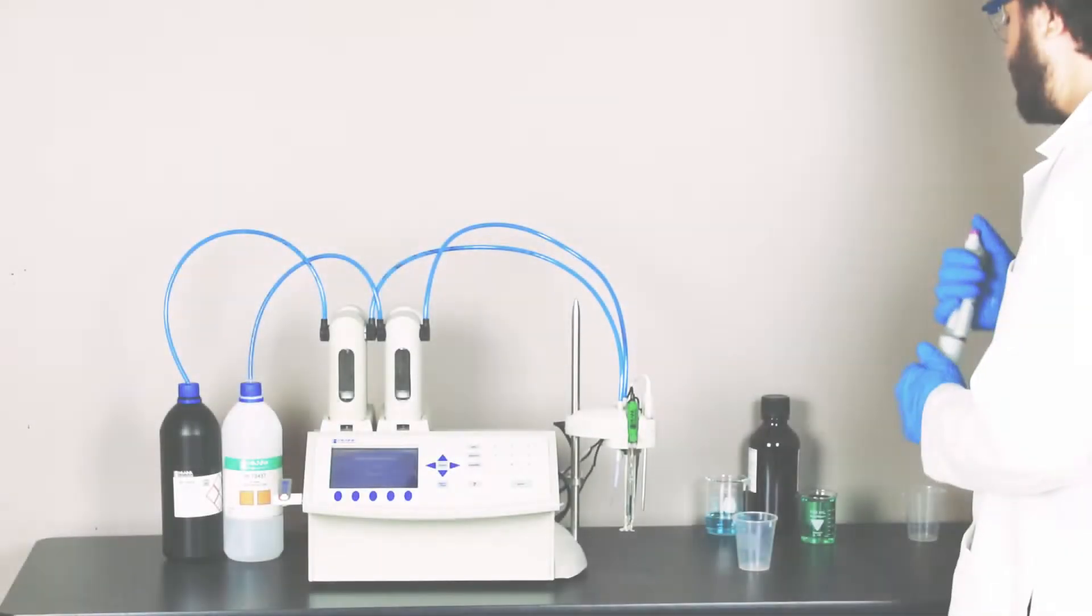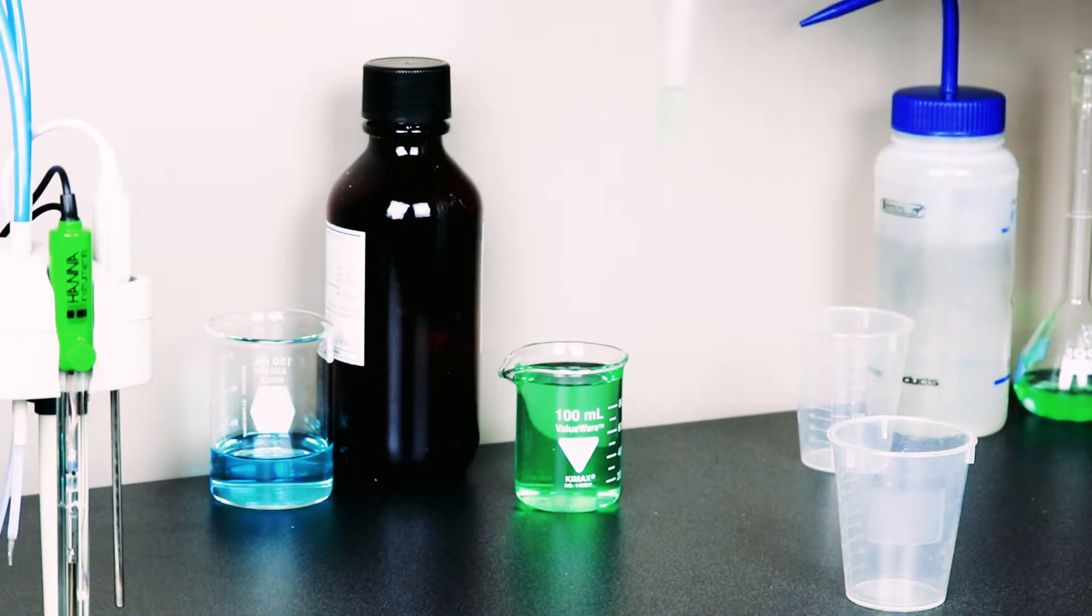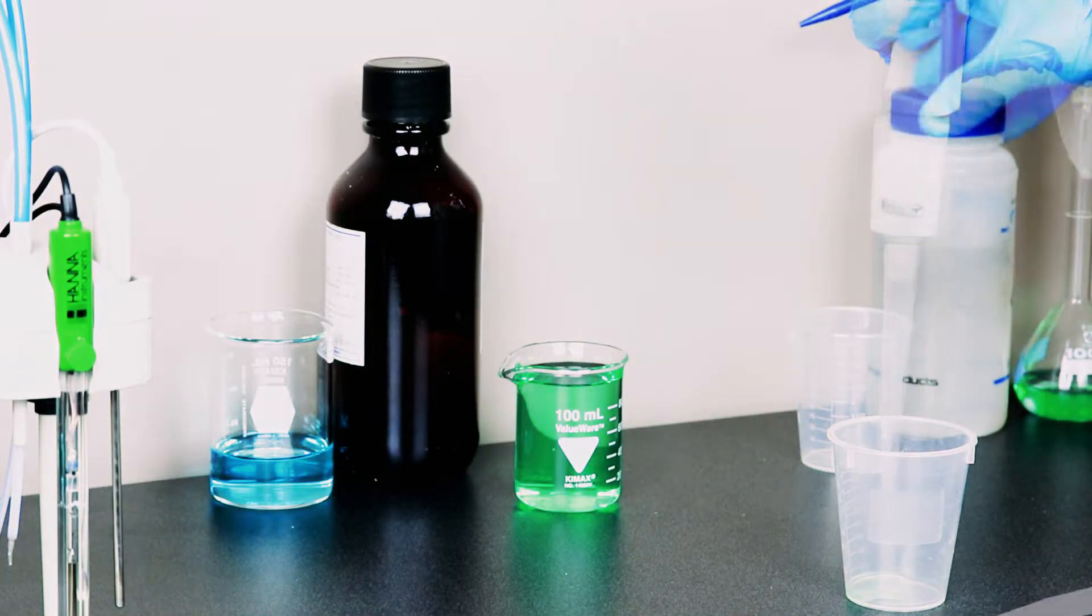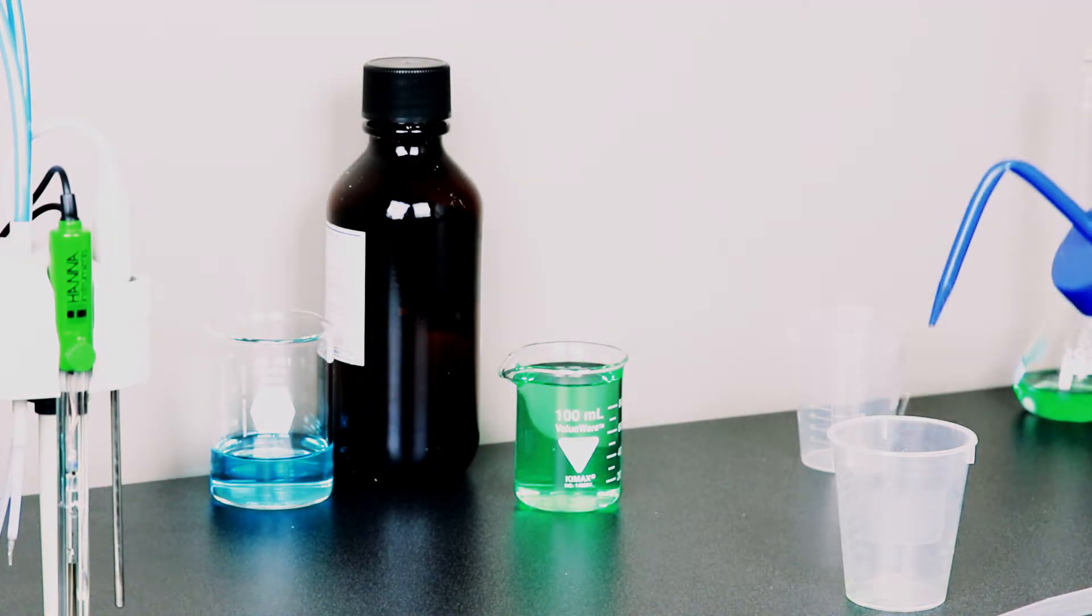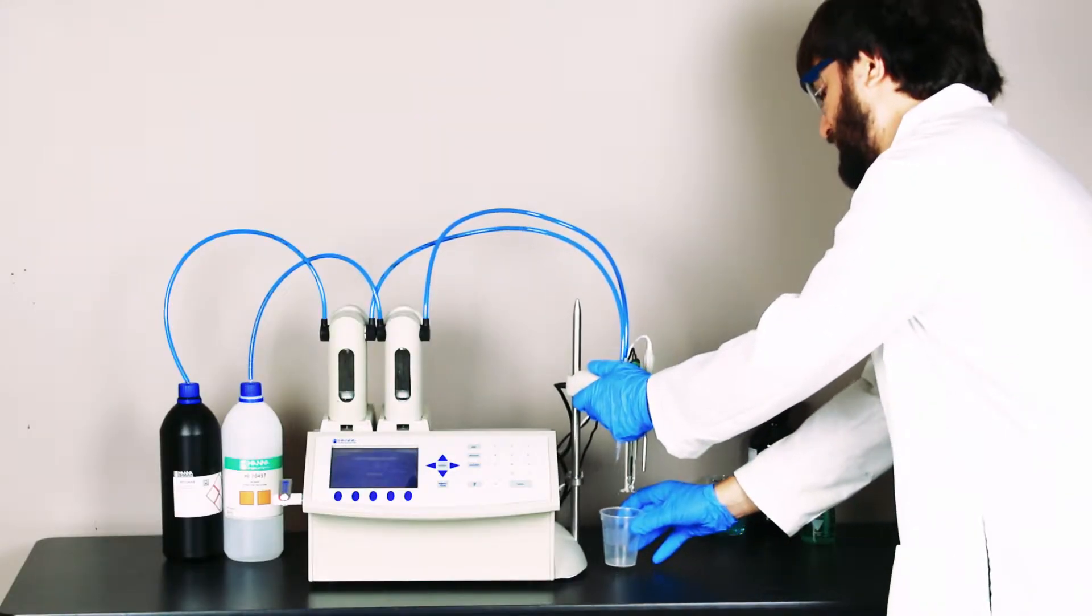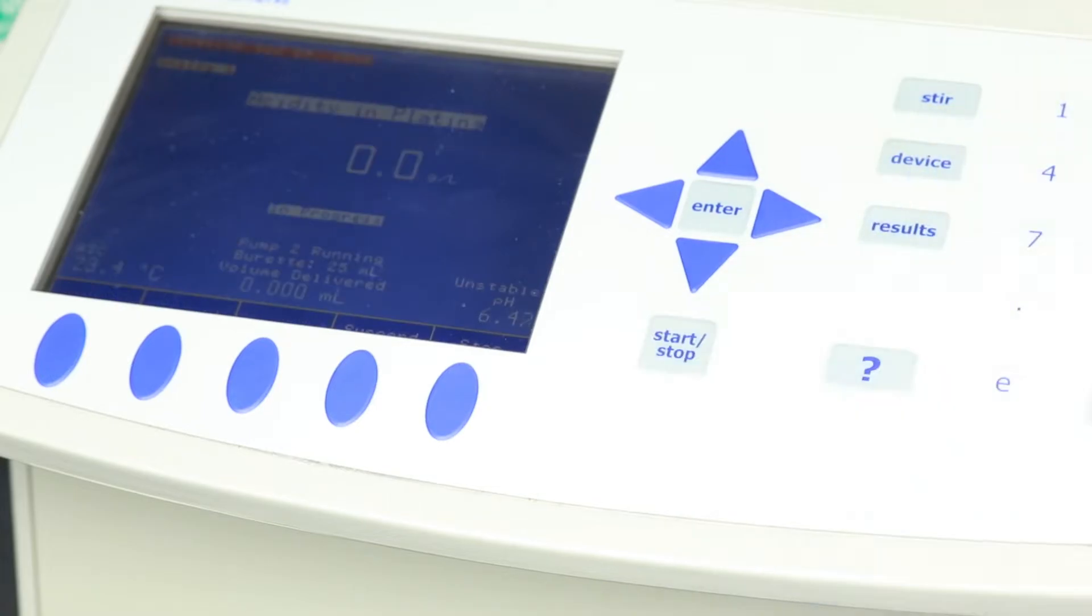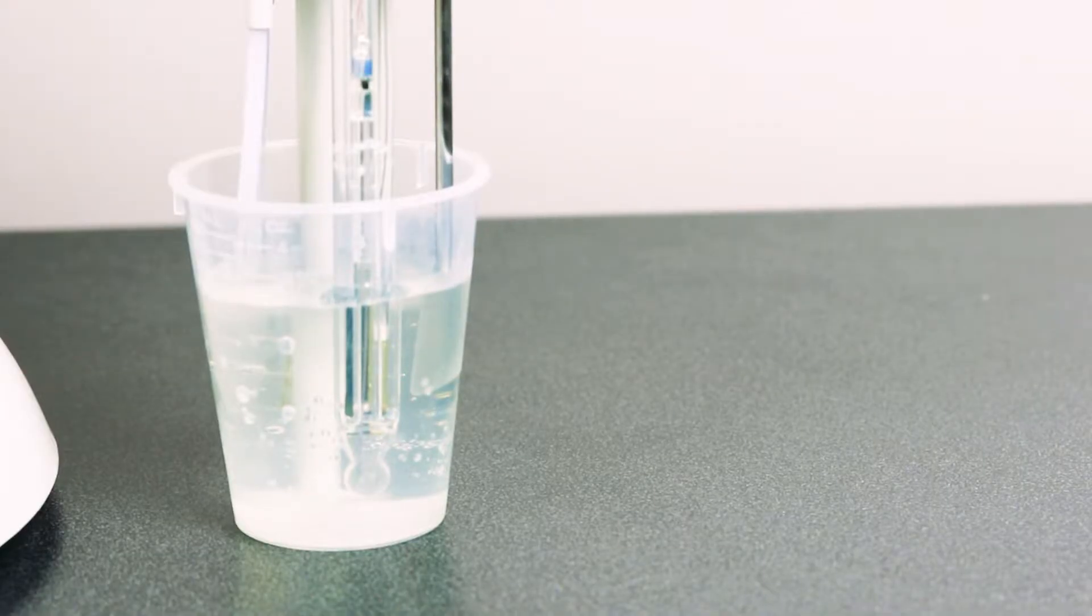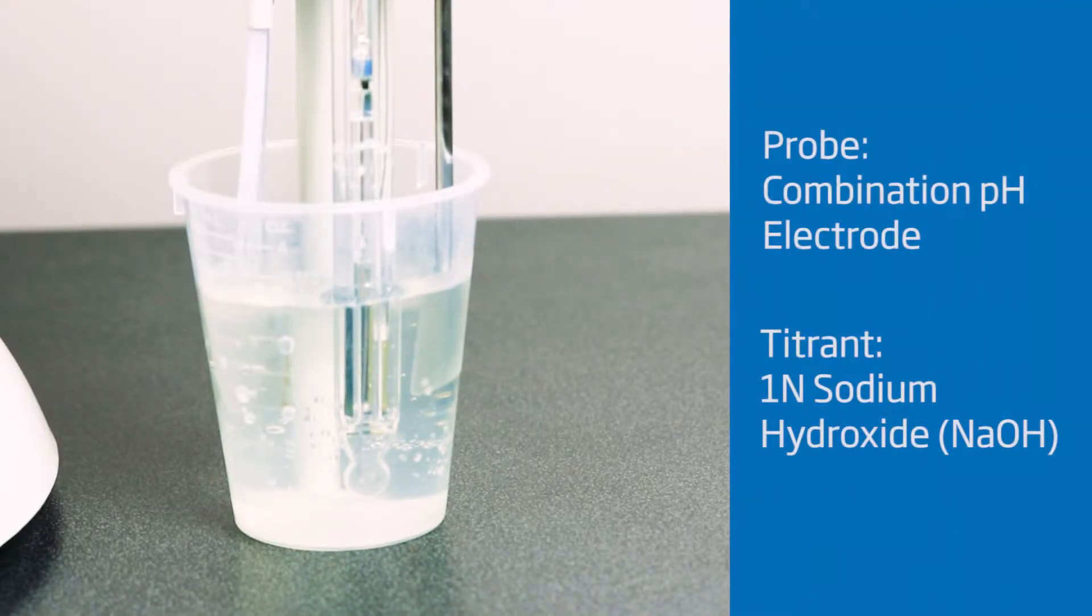To perform an acidity titration, simply grab your sample, add deionized water to submerge the electrode, and press the start button to begin the titration. The Hanna titrator automatically titrates the sample with sodium hydroxide to a pH of 8.2.